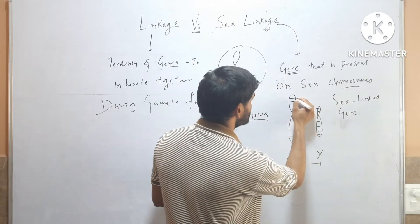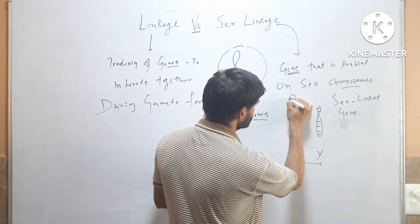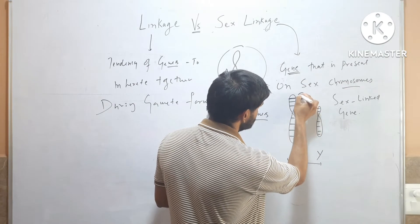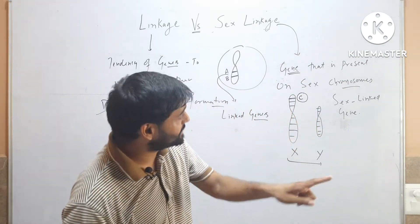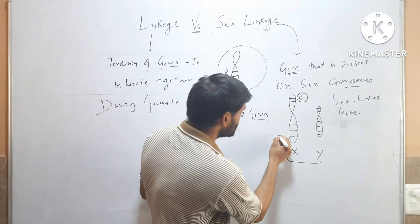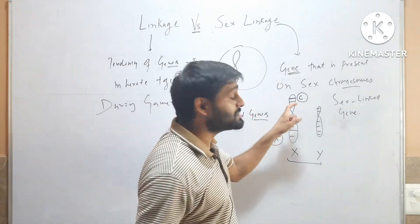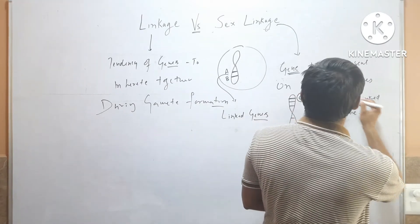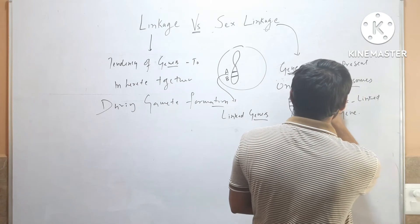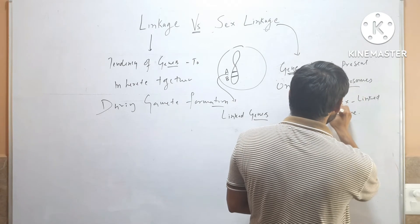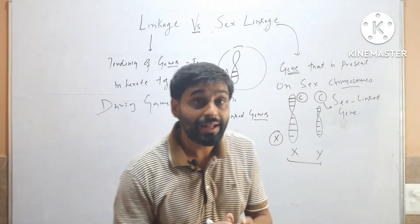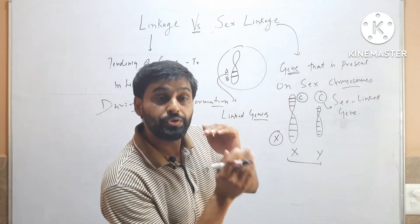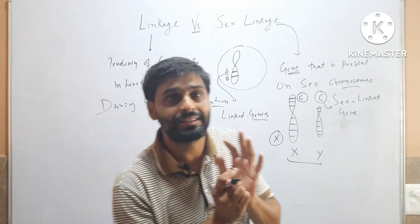Suppose this is a C gene and this gene is present on X chromosome. So this gene will be called a sex linked gene. This C gene will be a sex linked gene. It has nothing to do with another gene or position of another gene.